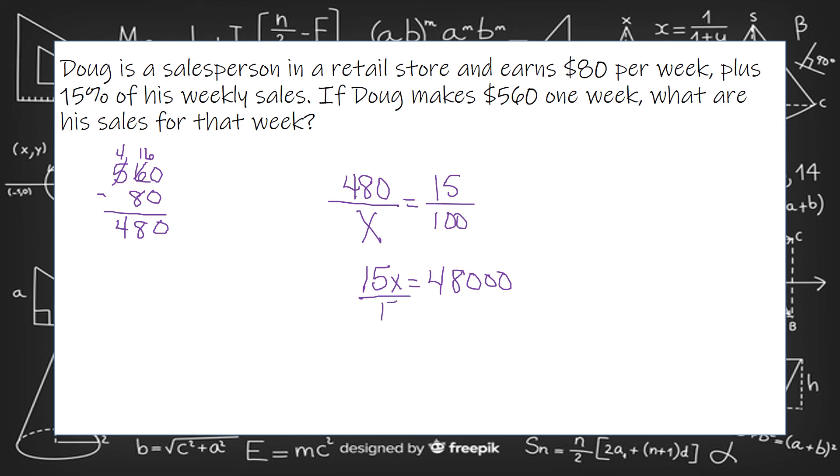So we're going to divide both sides by 15. So 48,000 divided by 15 is sales worth.